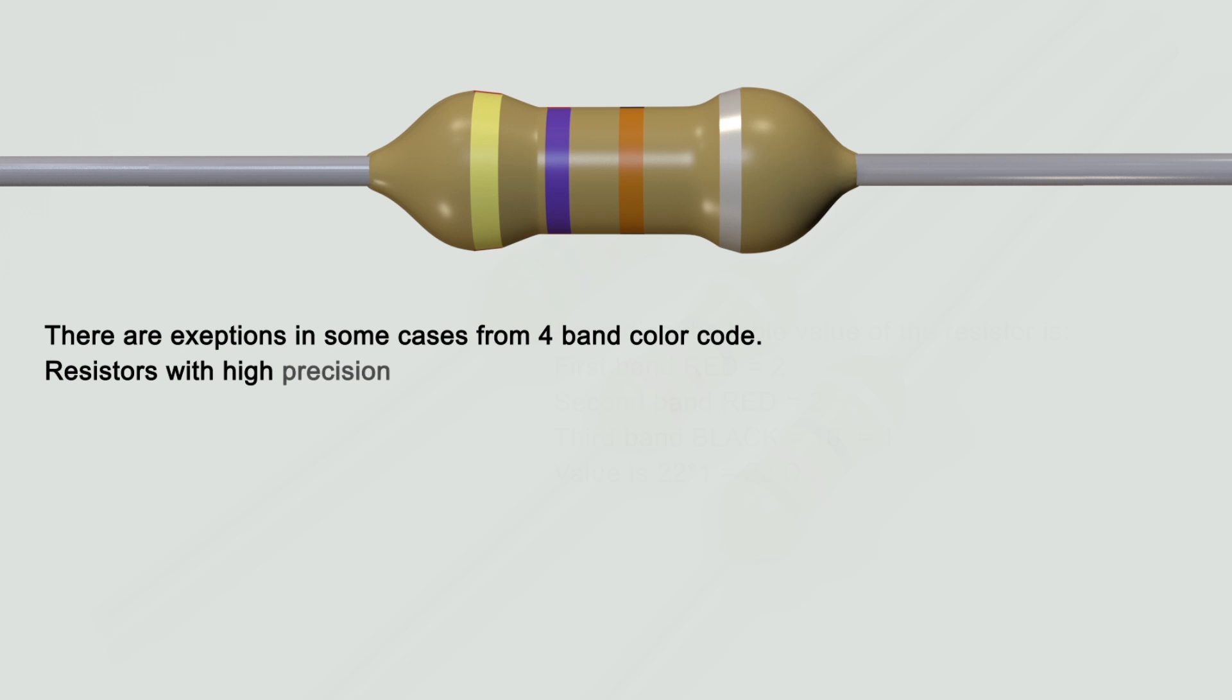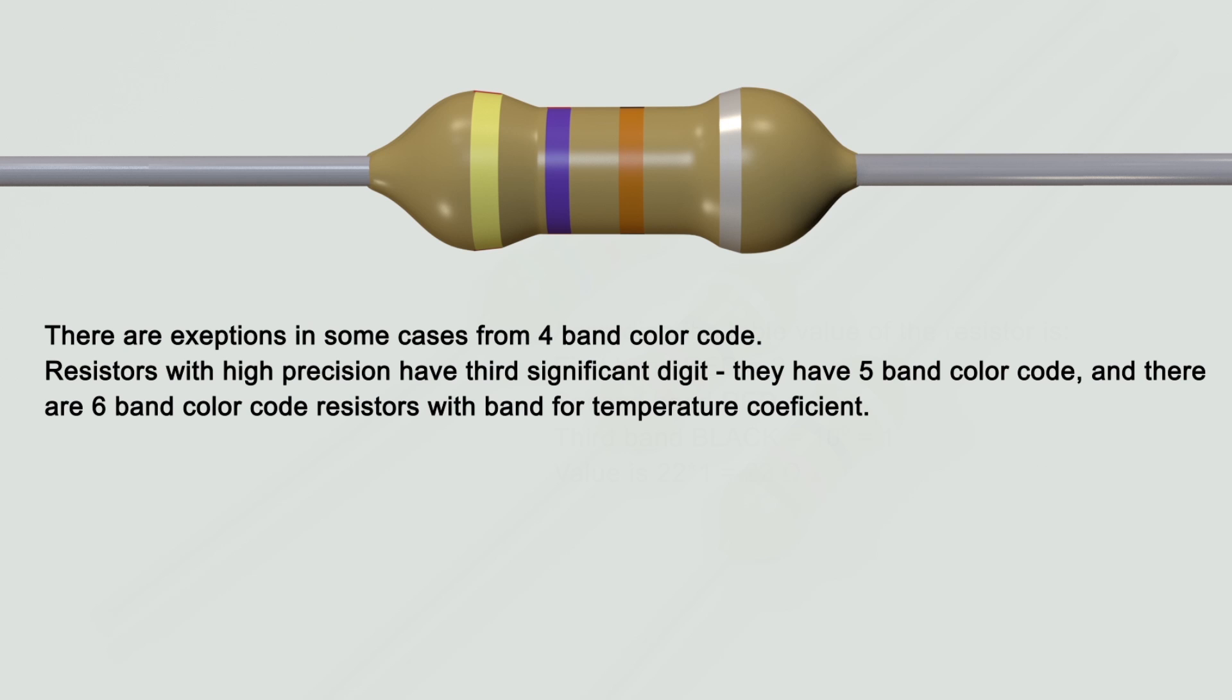There are exceptions in some cases from four band color code. Resistors with high precision have third significant digit, they have five band color code, and there are six band color code resistors with band for temperature coefficient.